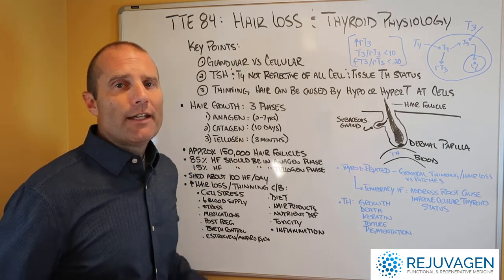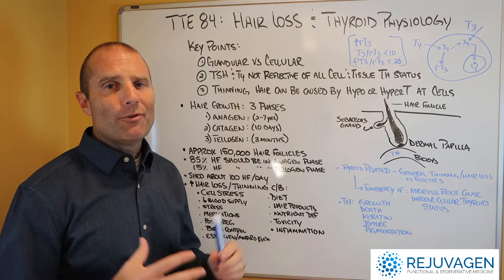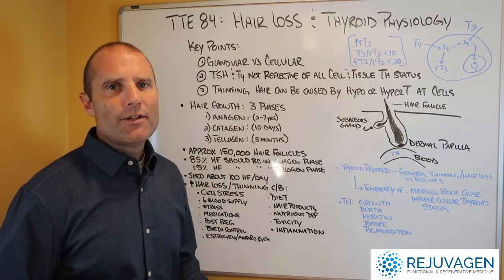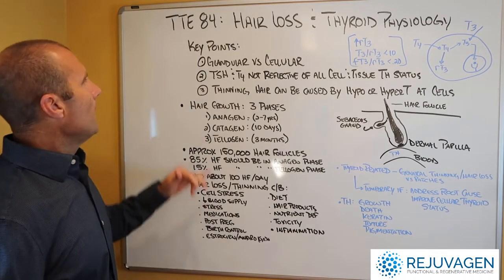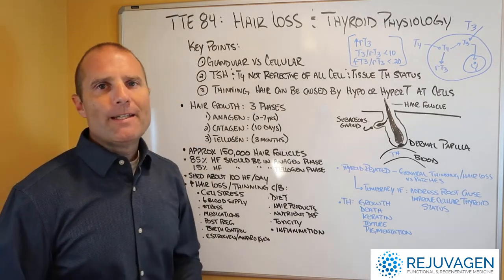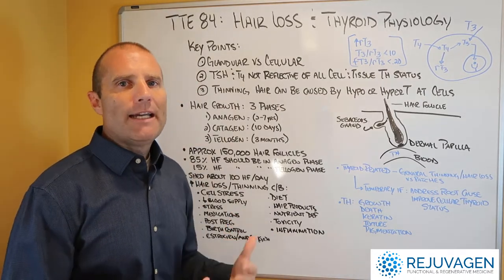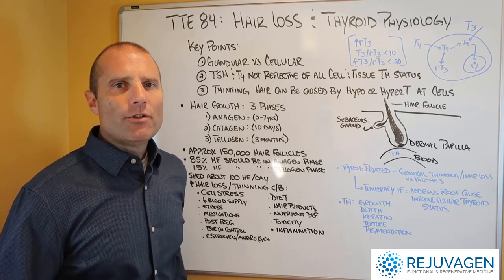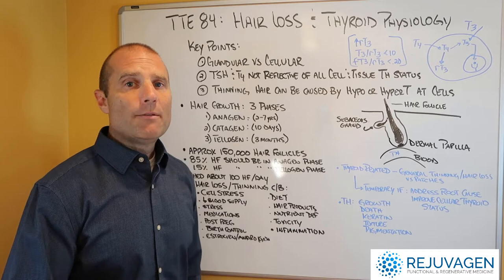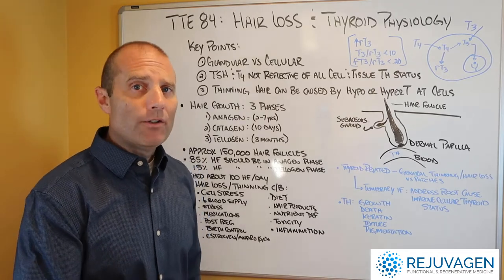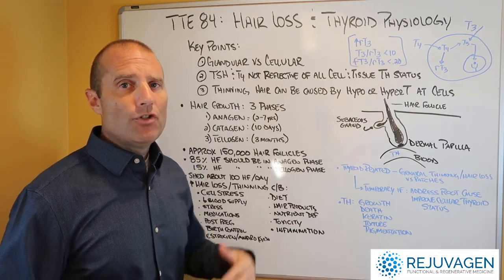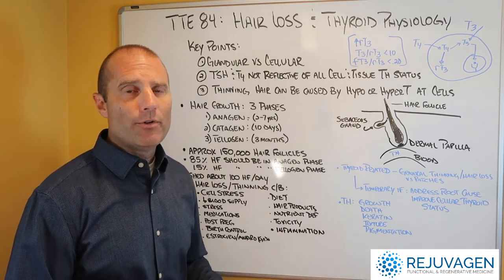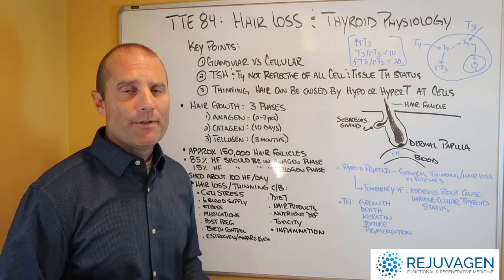There's definitely a connection between hair loss or hair thinning and thyroid hormone reaching your hair cells or your hair follicles. A couple of key points we want to talk about first is the difference between glandular thyroid problems and cellular thyroid problems. Glandular thyroid problems are where your gland is making too much or too little thyroid hormone. If it's too much, we call that hyperthyroidism. If it's too little, we call that hypothyroidism.